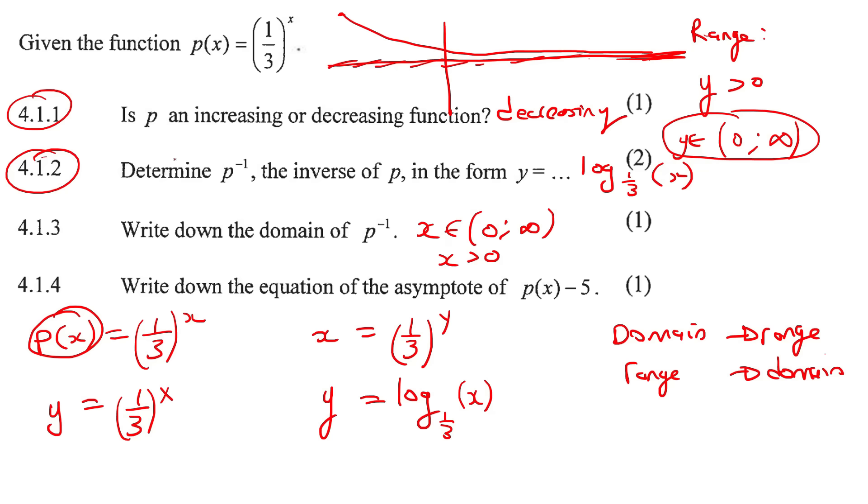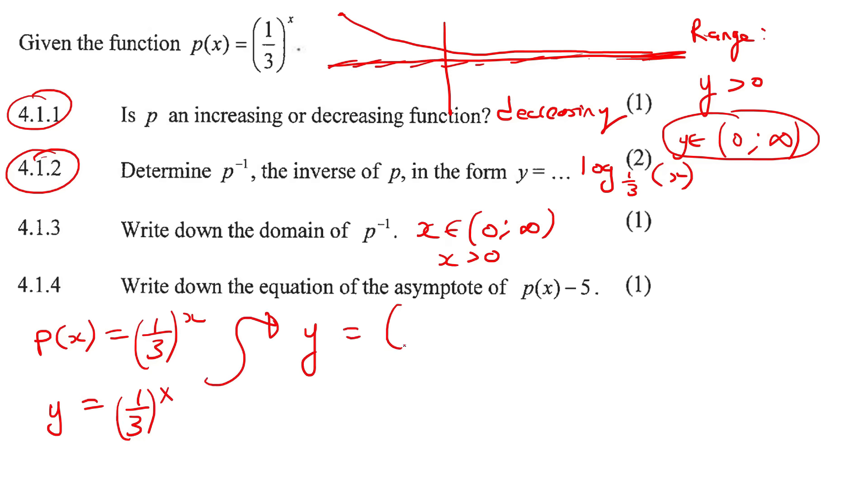I just want to quickly come back to this question. I just remembered that a lot of learners, what they like to do is the following. They change this. They don't like to have this fraction over here. So what they do is they change it to three to the negative one, because three to the negative one is the same as one over three.